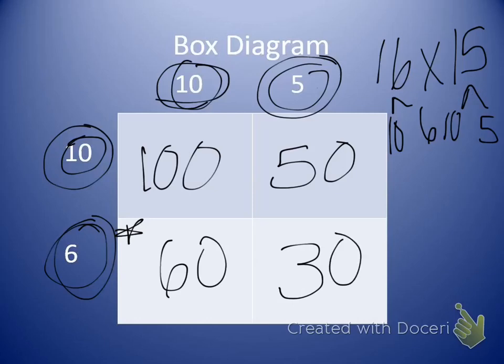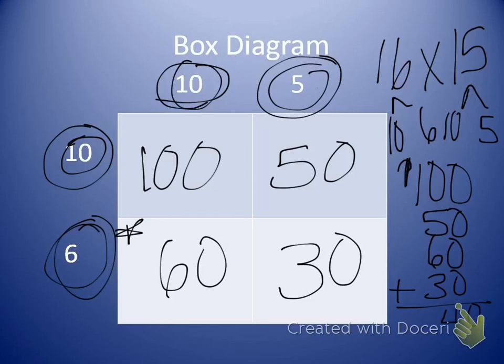Each one of these, when we break it apart and try to find the answer, each one of these would be my partial products. And we always add our partial products together. So using the box diagram, I'm going to set up my numbers, remembering to line up all the numbers in the right place value, and then I'll add them together. Giving me 240. So my answer would be 240 players.